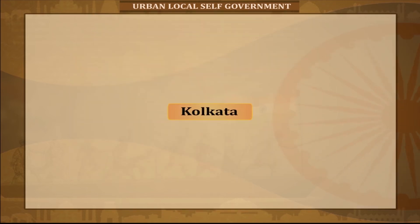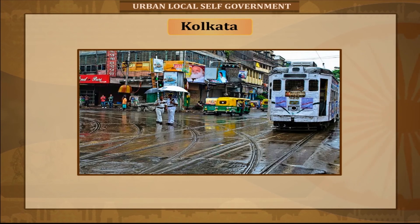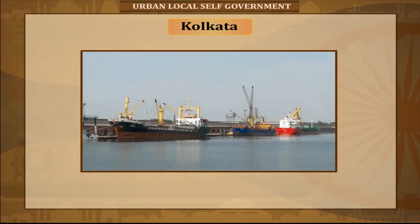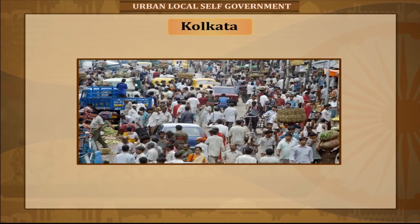Kolkata, also known as Calcutta (the official name until 2001), is the capital of the Indian state of West Bengal. Located on the east bank of the Hooghly River, it is the principal commercial, cultural, and educational center of East India, while the Port of Kolkata is India's oldest operating port and its sole major riverine port.